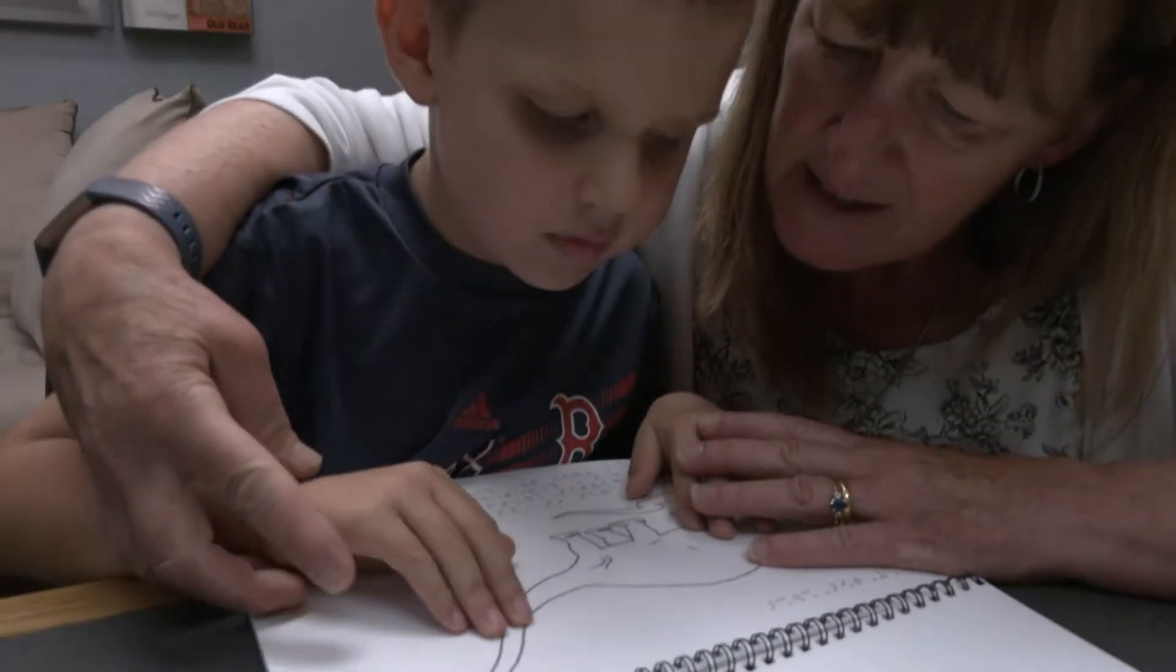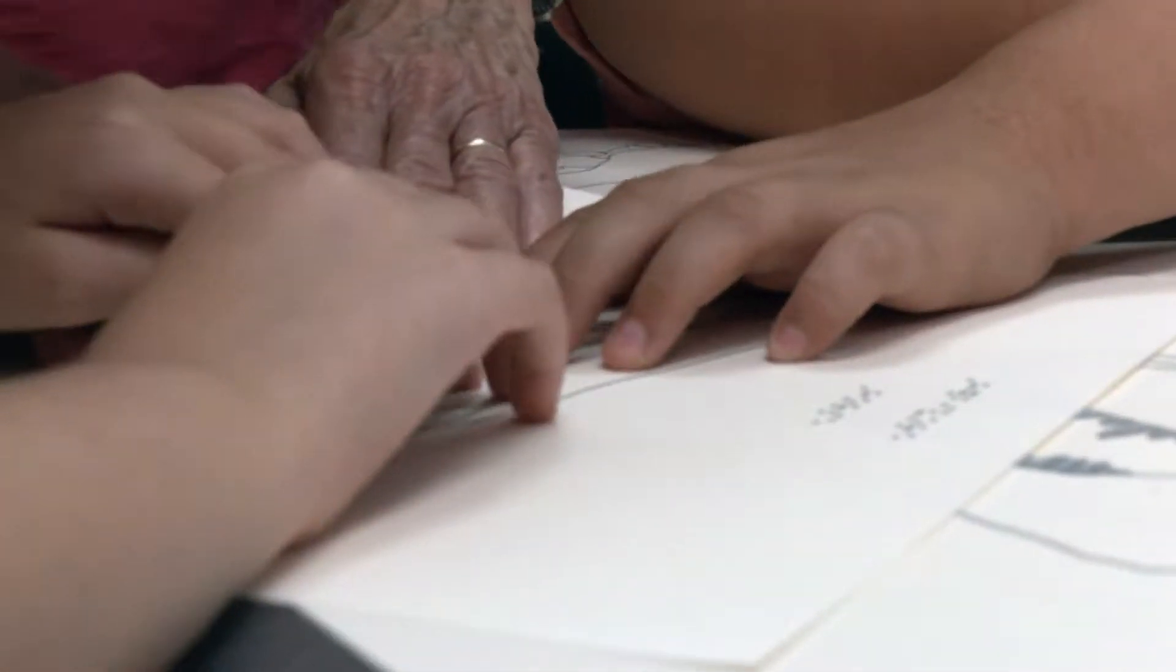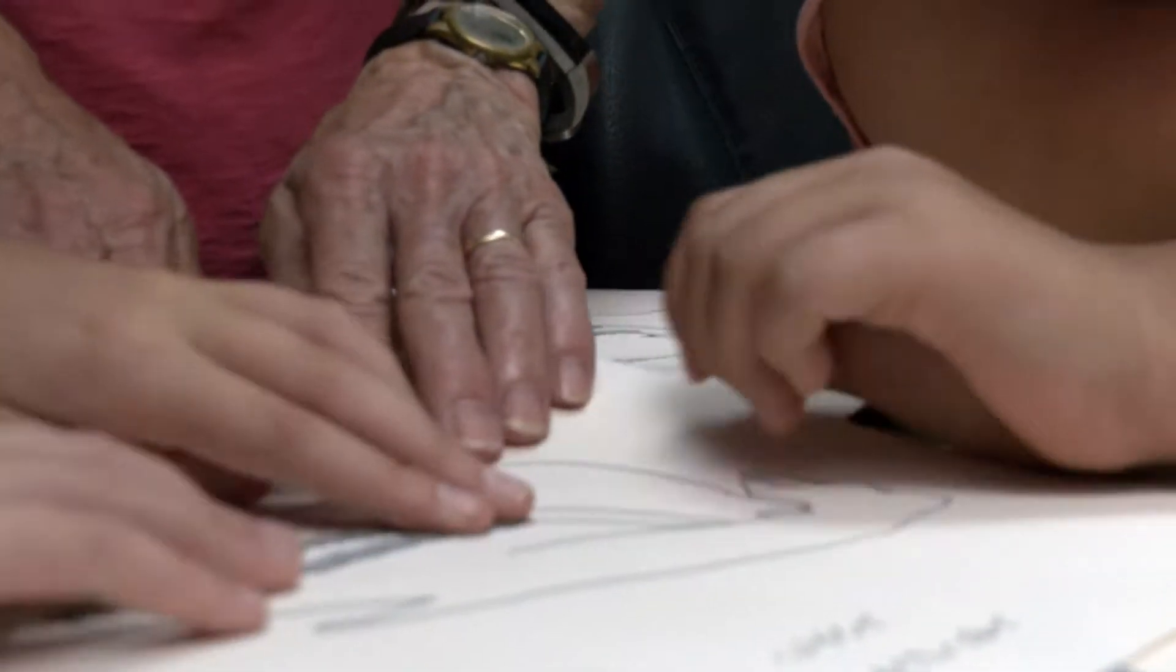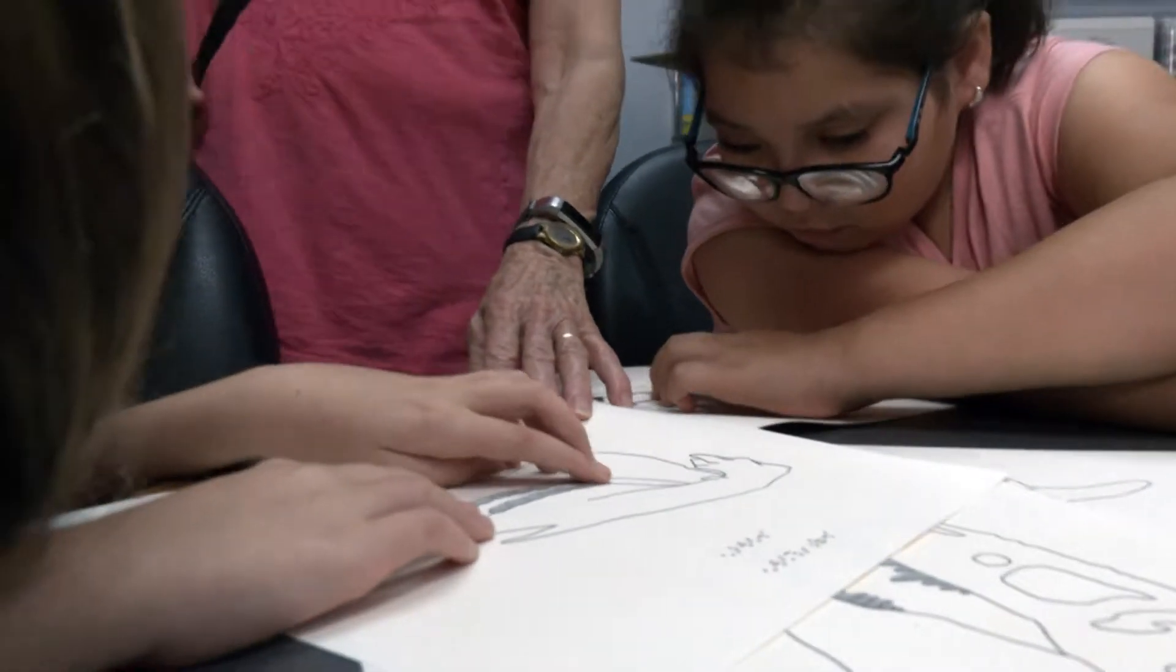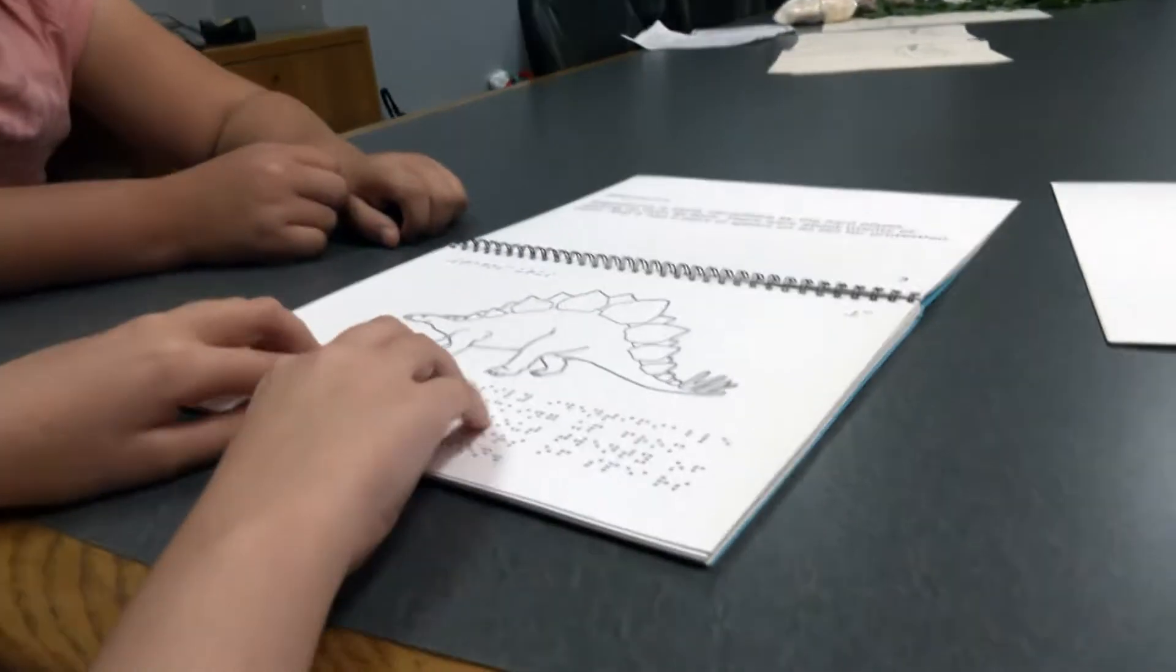Tactile graphics are an important literacy tool for children who are visually impaired and must be explicitly taught, as they are not automatically meaningful. As the child develops more concepts and braille skills, higher level graphic skills are introduced.